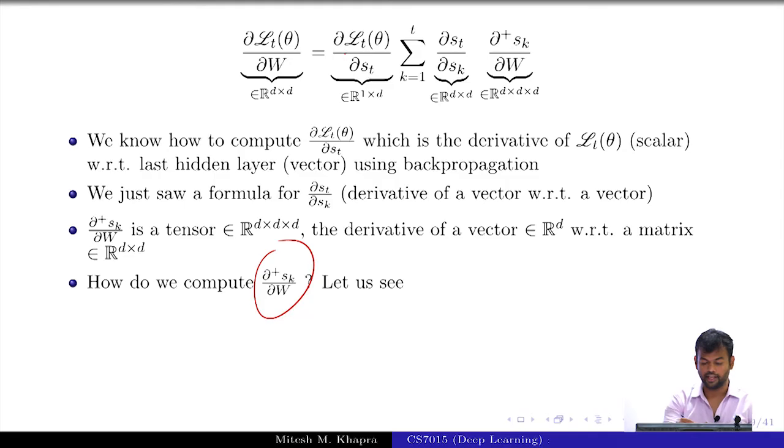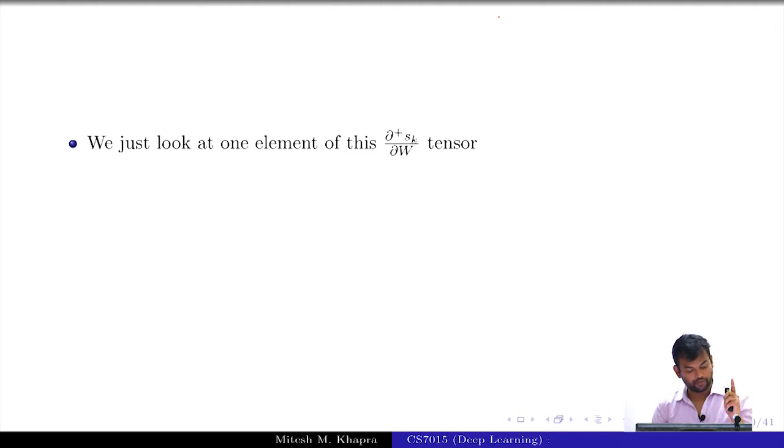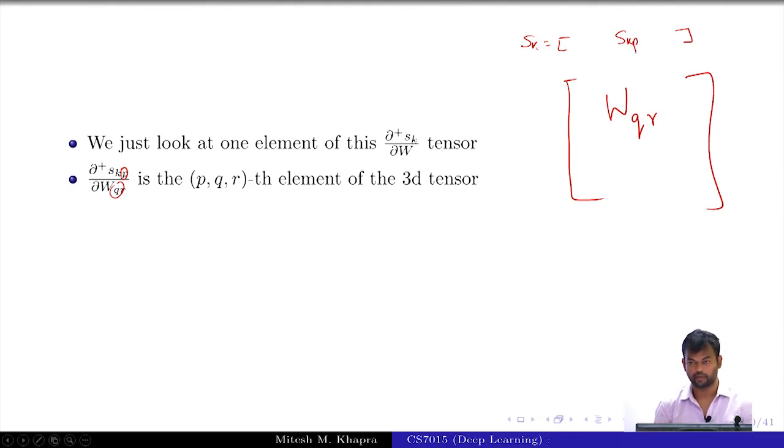So how do we compute this? All the other terms are covered. This is the only one that we don't know. We will just look at one element of this tensor, and it is going to be ∂S_kp/∂W_qr. You have S_k as this vector and W as this matrix. I'm considering one such weight which is W_p,q and one element from here which is S_k, so Q,R, and I'm considering one element from this which is S_kp. I'm trying to compute the derivative of one element of the vector with respect to one element of the matrix. This is going to give me one entry in my tensor, and that entry is going to be P,Q,R.